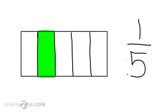The fraction one-fifth matches this shape because it is divided into five equal parts, and only one part, or one-fifth, is shaded. One, the numerator, is the part we are thinking about, and five, the denominator, is the total number of parts. I can read this fraction as one over five, one out of five, because I am thinking about just one part out of a total of five parts, or simply as one-fifth.